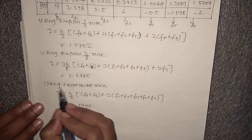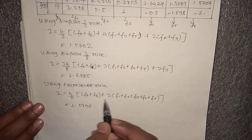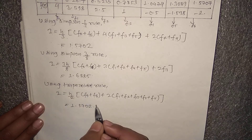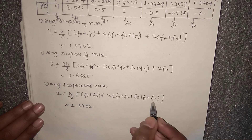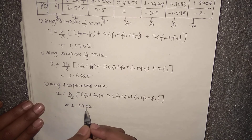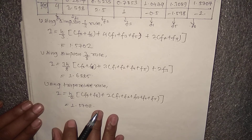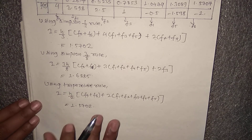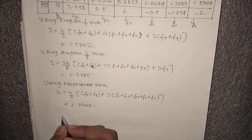Similarly, using the Trapezoidal rule, I equals h/2 times (f0 + f6 + 2 times the sum of remaining terms). Substituting all values from f0 to f6, we get I = 1.5702. So using these formulas we can calculate all the values of integrations. Thank you for watching the video.